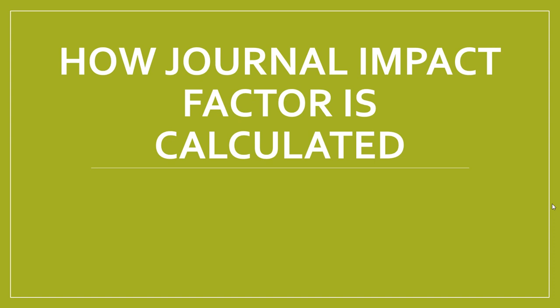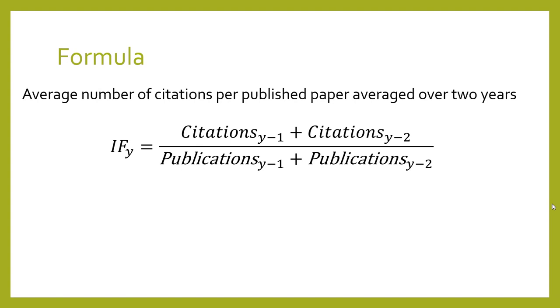In this video we're going to look at how the journal impact factor is actually calculated. Fundamentally, there is a formula that calculates it for you. The formula looks at the average number of citations per paper averaged over two years.